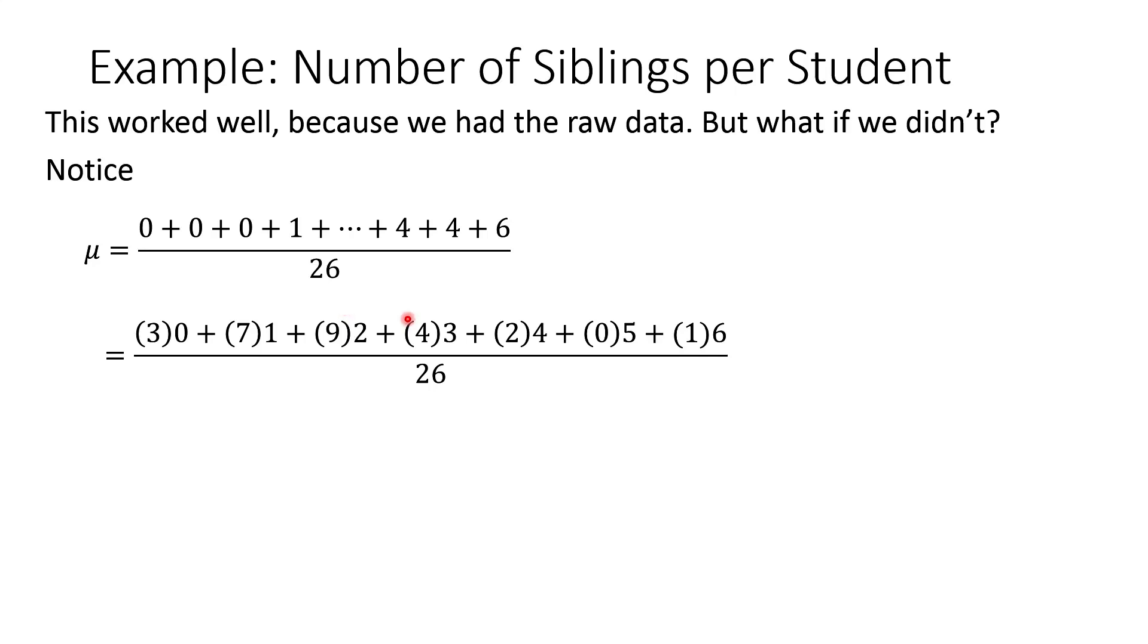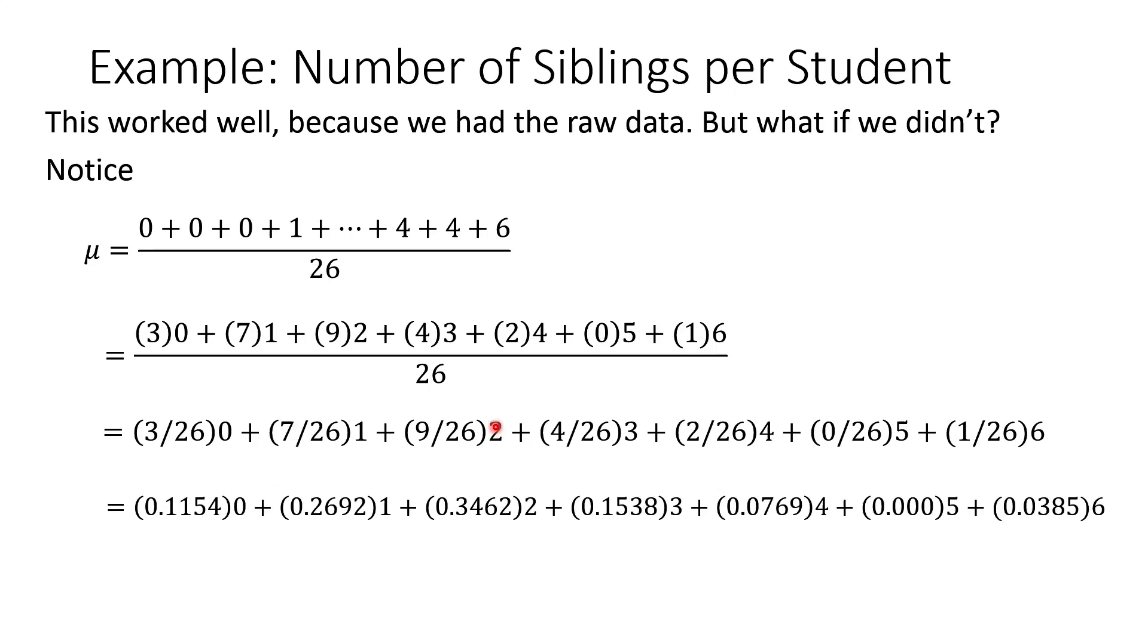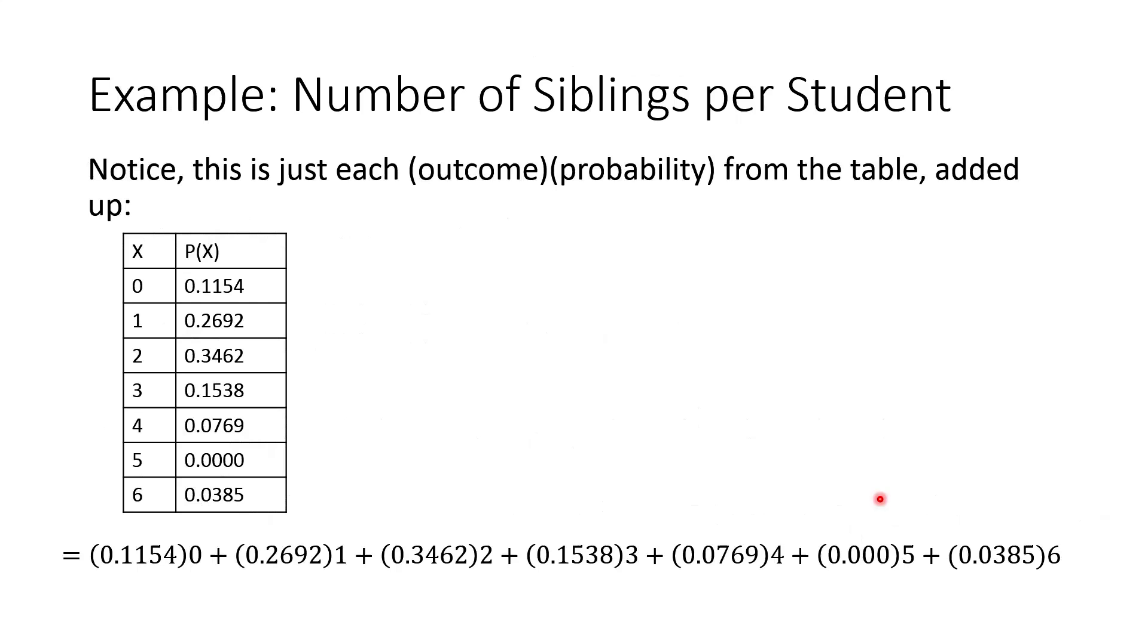If I do that, then notice that this is just a sum divided by 26. So if that's the case, I could just divide 26 into each term. Divide 26 here, here, and here. And it would look like this. So this would be three divided by 26 times zero, seven divided by 26 times one. And the reason is, is because if I actually perform those divisions, and get the decimals, these values should look really familiar. In fact, these values are exactly the same values that we saw in the probability distribution, when we showed each outcome, and then its probability of occurring.